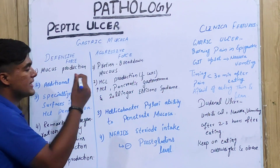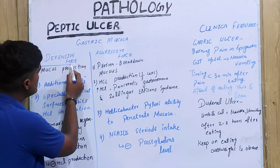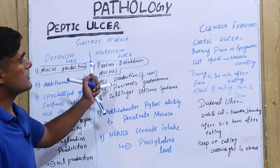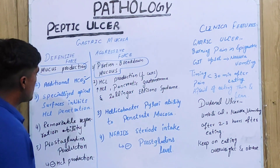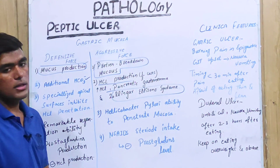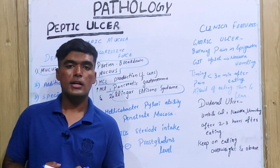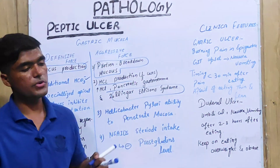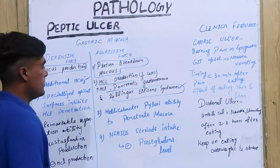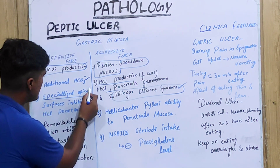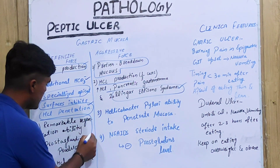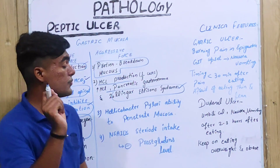Let us talk about what defensive and aggressive forces are. In the case of defensive forces, there is increased mucus production, and there is also breakdown of mucus by certain proteins. There is additional bicarbonate secretion. In aggressive forces, HCL production increases, and Zollinger-Ellison syndrome comes into play — which occurs in the upper GI tract, especially in the pancreas and duodenum, where tumors and carcinomas develop. There are also specialized apical surface inhibitors against HCL penetration, and there is a remarkable regeneration ability as part of defensive forces.